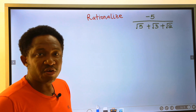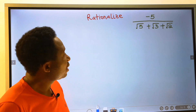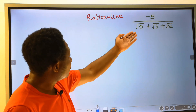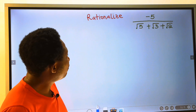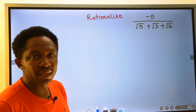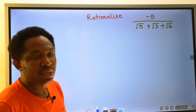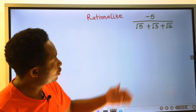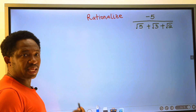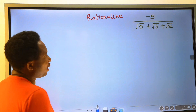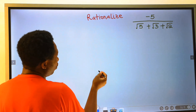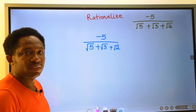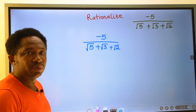Let's rationalize minus 5 divided by the square root of 5 plus the square root of 3 plus the square root of 2. Step number 1, I will write down the given question. Step number 2,